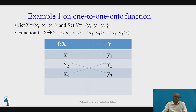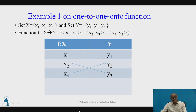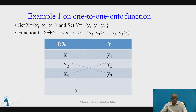Here is the first example. Set X contains elements x1, x2, and x3, and set Y contains elements y1, y2, and y3 — three elements in each set. Function f from set X to set Y is defined as: x1 is mapped to y1, x2 is mapped to y3, and x3 is mapped to y2.